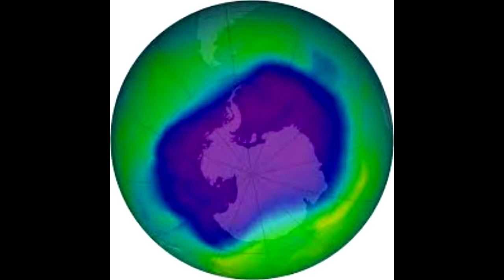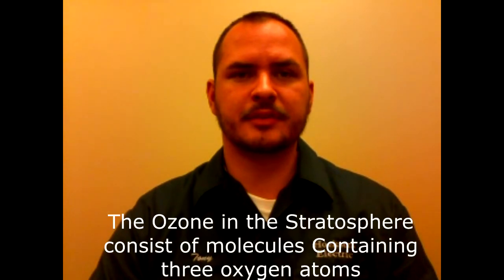The ozone layer acts as a filter for the sun's ultraviolet rays. This protects human, plant, and sea life from the damaging effects of the rays.